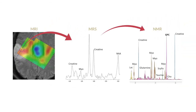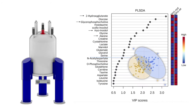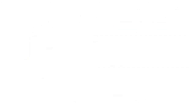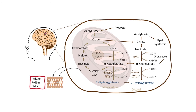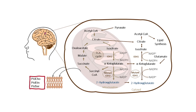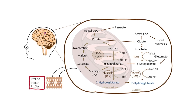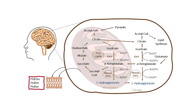By using ex vivo tissue biopsies for NMR-based metabolomics, we can learn much more about tumor metabolism and decipher tumor heterogeneity. By that, we can identify more than 50 metabolites with quantitative values and put these metabolites into pathway analysis to understand what metabolites are associated with IDH1 mutation or oxidative stress — and from that, identify novel therapeutic approaches and treatment targets.